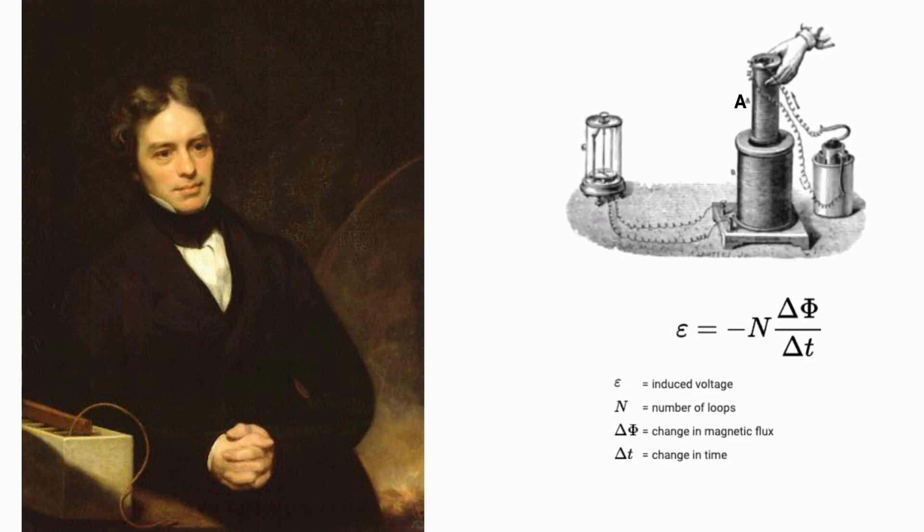When the coils are stationary, no current is induced. But when the small coil is moved in or out of the large coil B, the magnetic flux through the large coil changes, inducing a current that is detected by the galvanometer G.